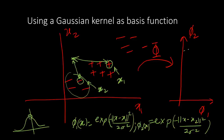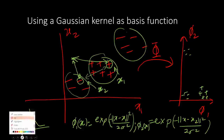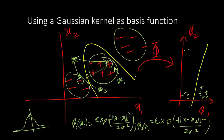The negative points near x2 will fall in a region of high phi2 and low phi1. Points near x1 will have high phi1 and low phi2. Other points far from both will have low phi1 and low phi2. In this transformed space, we can draw a linear boundary to separate the data — a non-linear boundary in x-space becomes a linear boundary in phi-space.